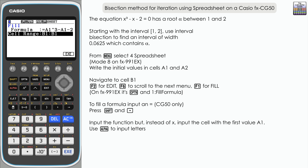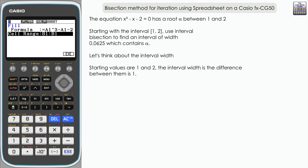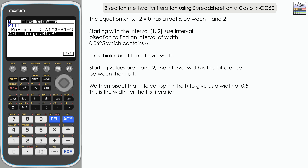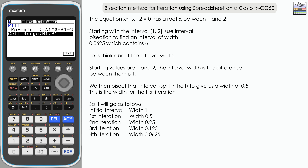Now let's think about how many cells we're going to need. We've got two initial values in the first two rows, and we want an interval width of 0.0625. In the bisection method we're splitting the difference between the two interval values in half each time. Starting with a gap of 1 between our values 1 and 2: split in half gives 0.5, then 0.25, then 0.125, then the fourth iteration gives us one sixteenth which is 0.0625.